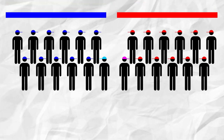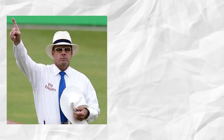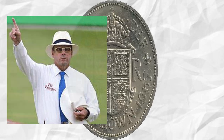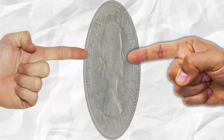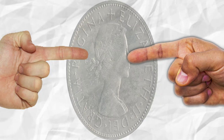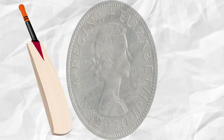First and foremost, two teams — eleven players, one reserve — on a large oval shaped field. You're already 50% of the way there. The umpire, or referee, flips a coin and the captain of each team must pick heads or tails. The one who guesses correctly gets to choose whether they bat or field.